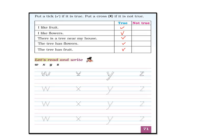And the third one is 'There is a tree near my house.' Yes, in my house there is a tree, so I can put a tick mark here. If you have a tree near your house, you can put a tick mark here. If you don't have any tree near your house, you have to put a cross mark here.